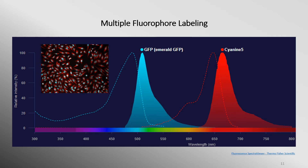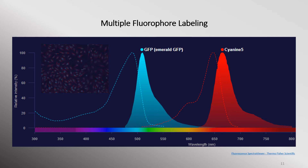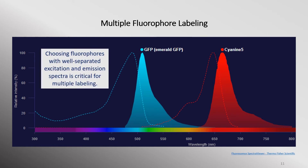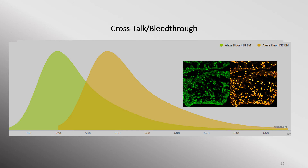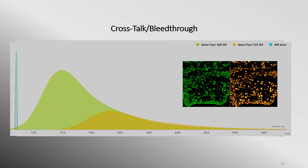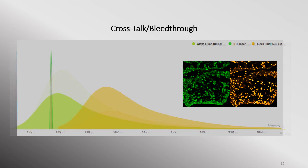In fluorescence microscopy, it is often necessary to selectively label sample structures with differently colored fluorophores in order to study interactions. Ideally, you should choose fluorophores that are well separated in terms of their excitation and emission spectra. Imaging a sample labeled with two or more fluorescent dyes that have overlapping excitation and emission spectra usually brings about a common microscopy problem known as crosstalk. For example, exciting Alexa Fluor 488 with a 488 nanometer laser also excites Alexa Fluor 532. Exciting the latter with a 515 nanometer laser also partially excites Alexa Fluor 488. Overlapping spectra can give false negatives or positives, or otherwise obscure data.